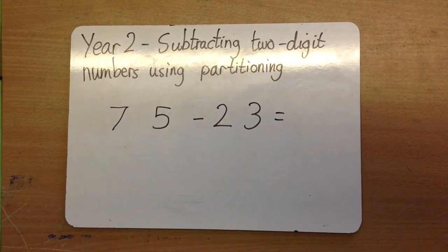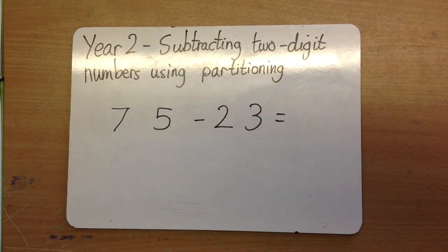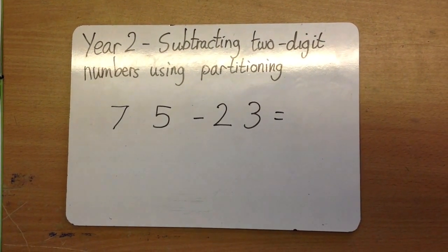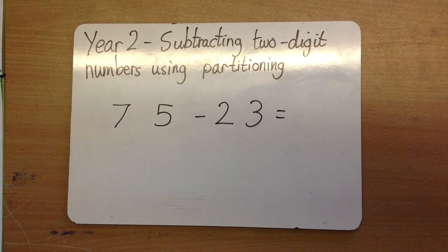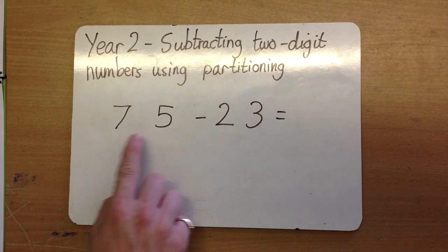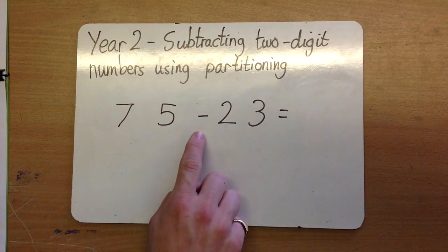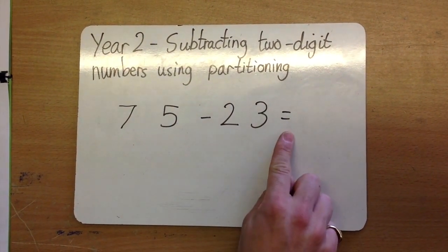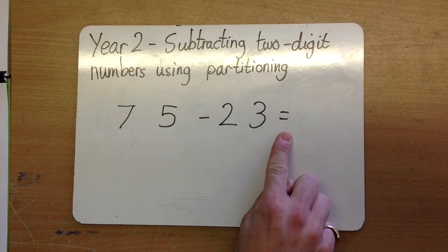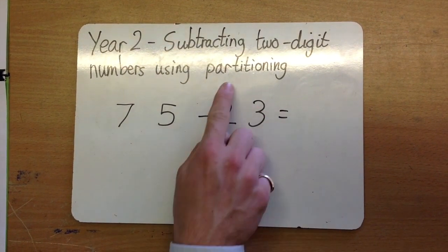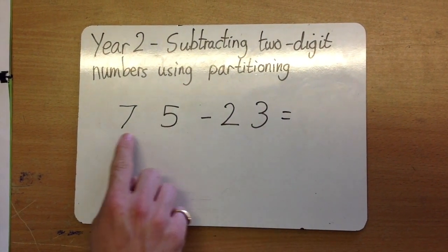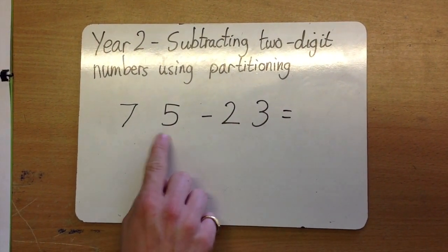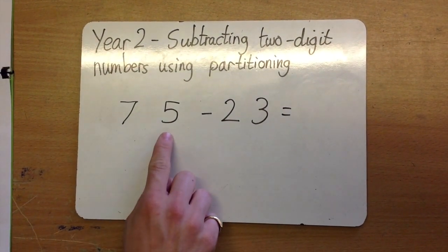Year 2. Subtracting 2-digit numbers using partitioning. 75 subtract 23 equals... First, partition 75 into its tens and units.